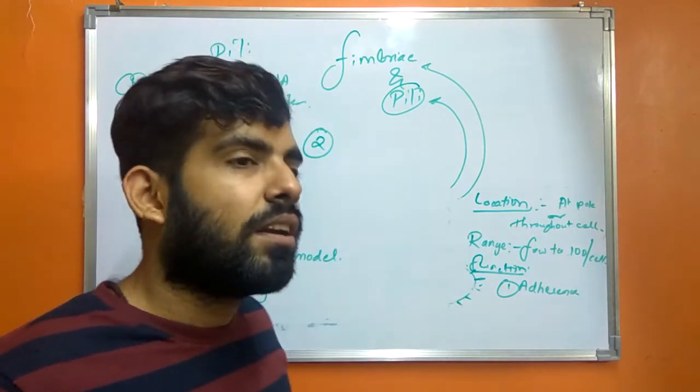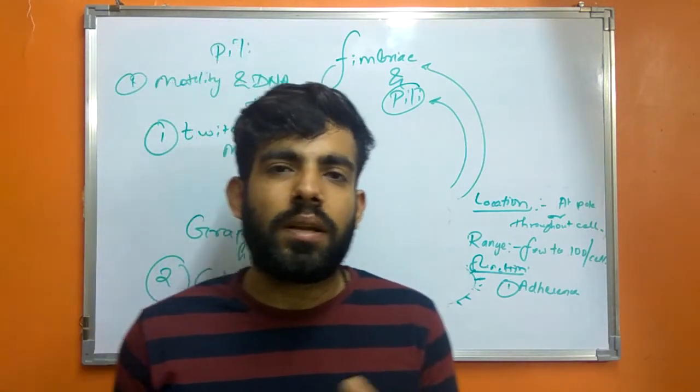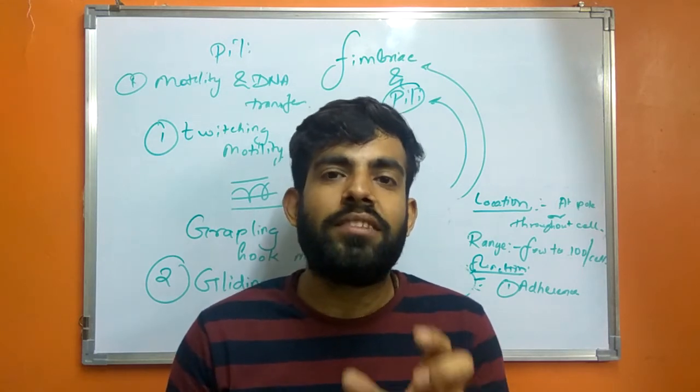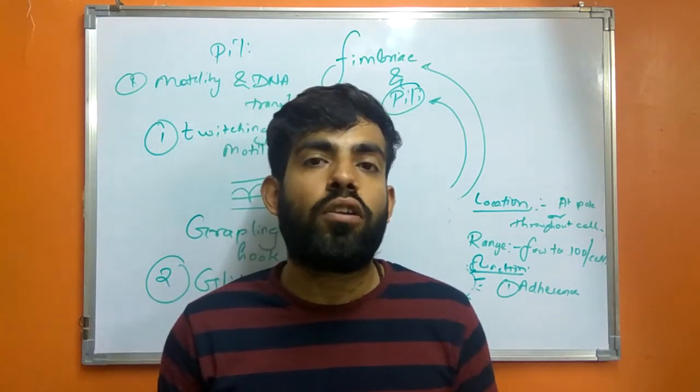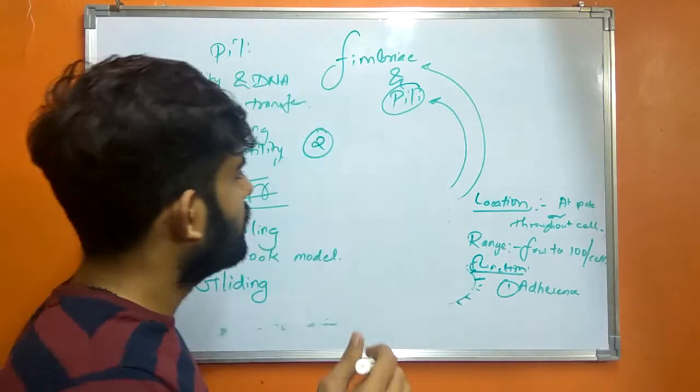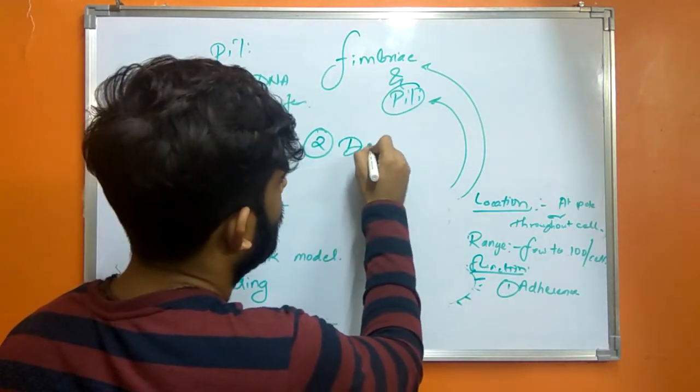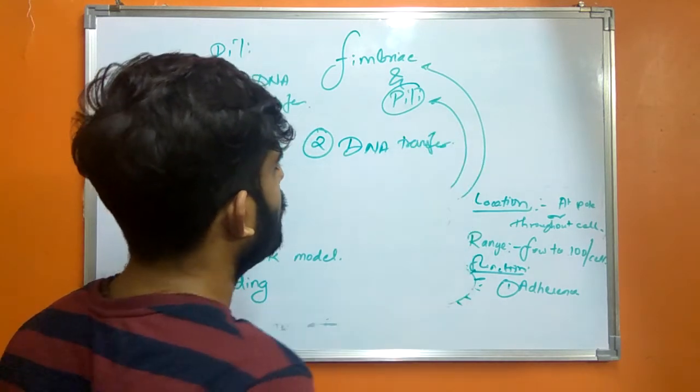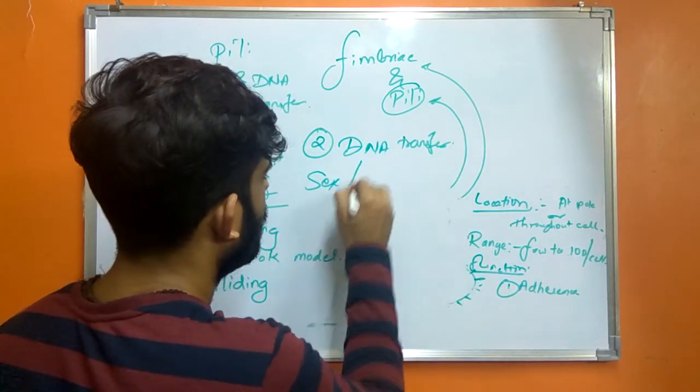Some Pilli are generally used for the transfer of genetic material by bringing two bacteria together. The Pilli that brings two bacteria together is known as sex Pilli or conjugation Pilli.